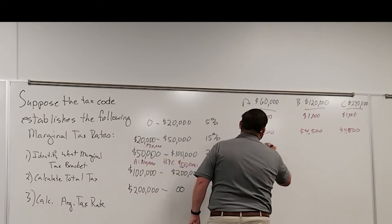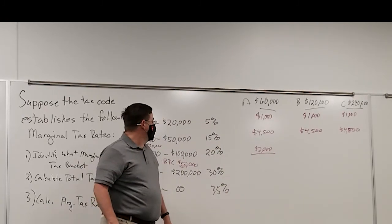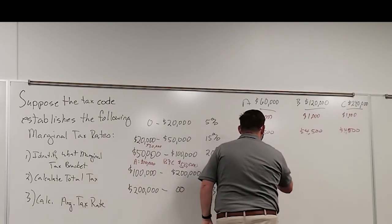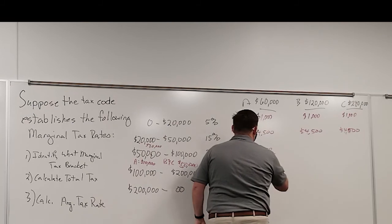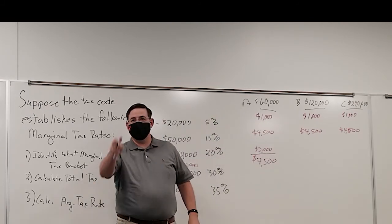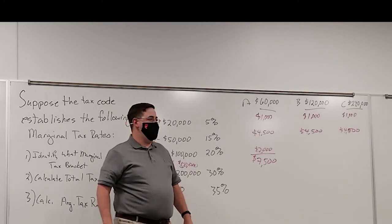Now that is the total tax that family A is going to pay. So altogether, they're going to pay $7,500. Is that what you got?